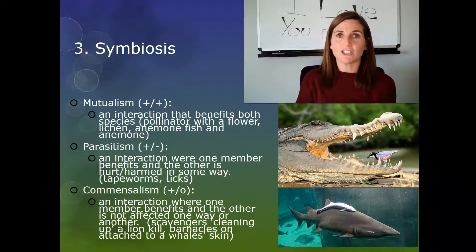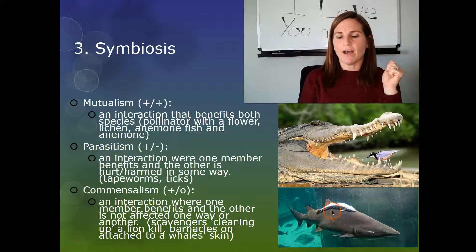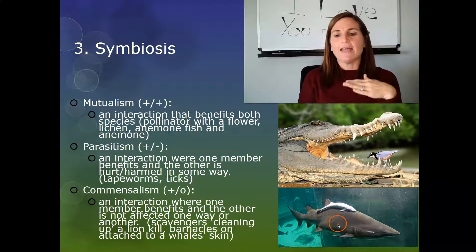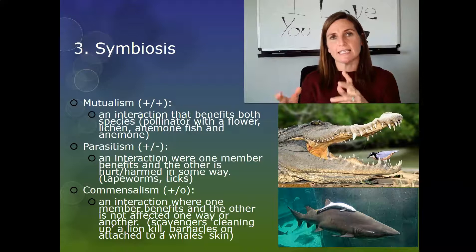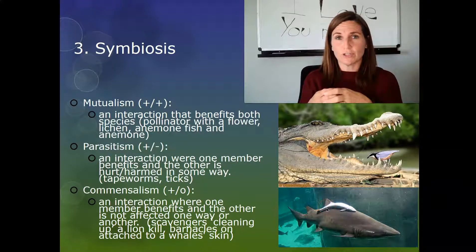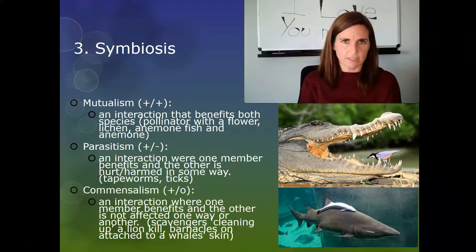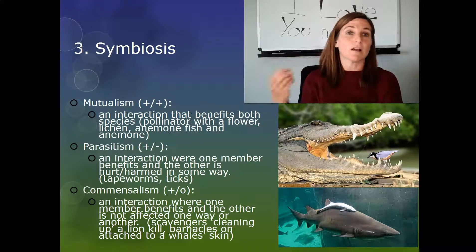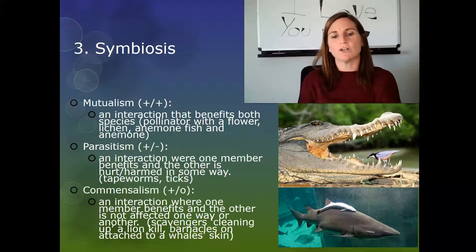A third type of symbiotic interaction is commensalism: a win-neutral relationship. For example, a small fish hangs out with a shark and eats the leftover chunks after the shark makes a kill. It's good for the fish, but zero for the shark — the shark doesn't care whether the fish eats the leftovers or not. Another example is a barnacle attached to a whale: the barnacle eats things it encounters as it travels with the whale, but it neither helps nor hurts the whale. It's neutral.